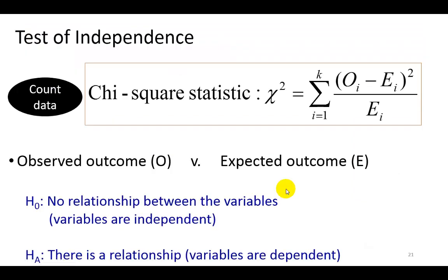As with other nonparametric methods, we're going to use count data, that is, enumerative data to describe the variables. We're then going to compare the observed outcomes to the expected outcomes to determine if there is a relationship or not using this chi-square statistic.